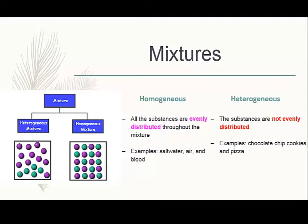In a homogeneous mixture, all the substances are evenly distributed throughout the mixture. But if that's all you knew about a homogeneous mixture, you wouldn't understand what it means to a chemist. Evenly distributed to a chemist means evenly distributed down to the molecular level — approximately the nanometer level.